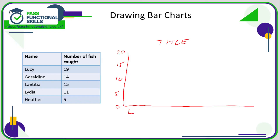Let's start with Lucy — Lucy is 19. 15 and 20 would be on thick lines, and in between we'd have four thinner lines, so Lucy would be at 19. Leave a small gap between Lucy and the next one, which is Geraldine. Geraldine is 14, so Geraldine's bar needs to be the same width as Lucy's — 10 is here so 14 would be about here.